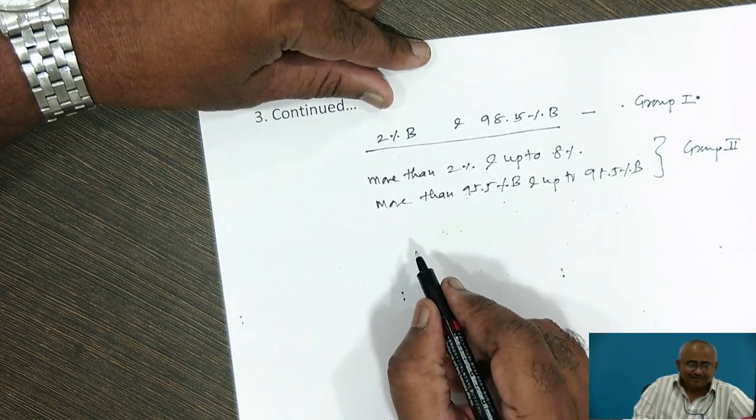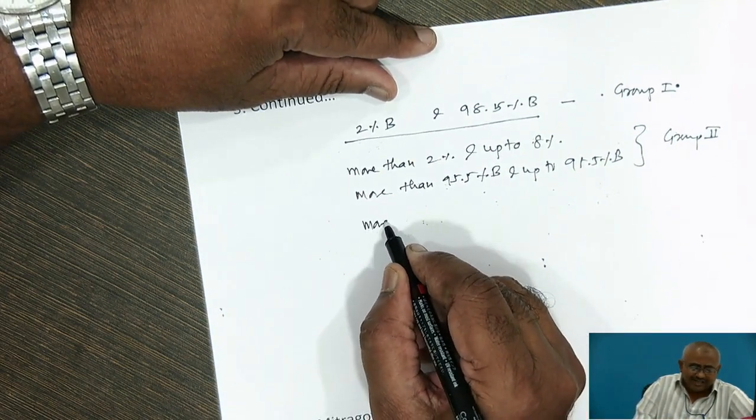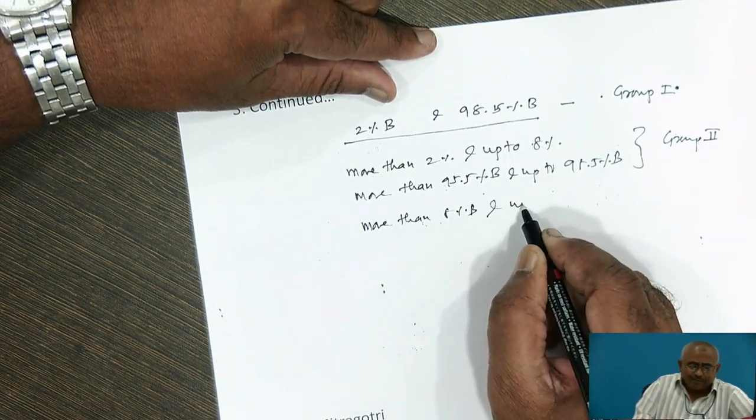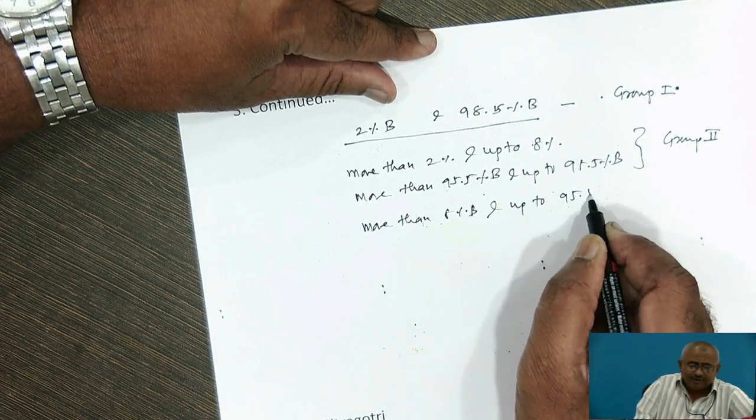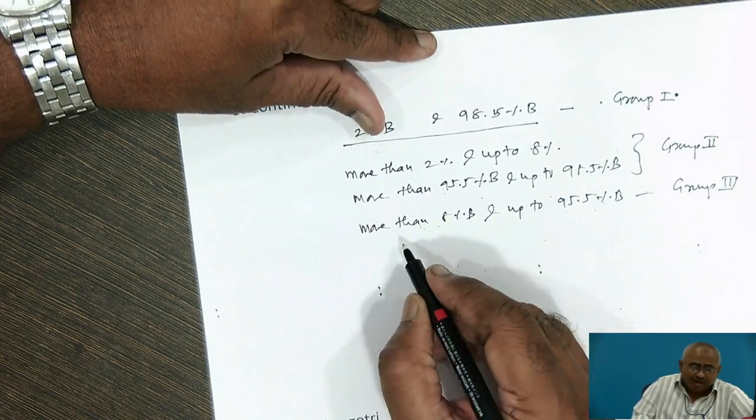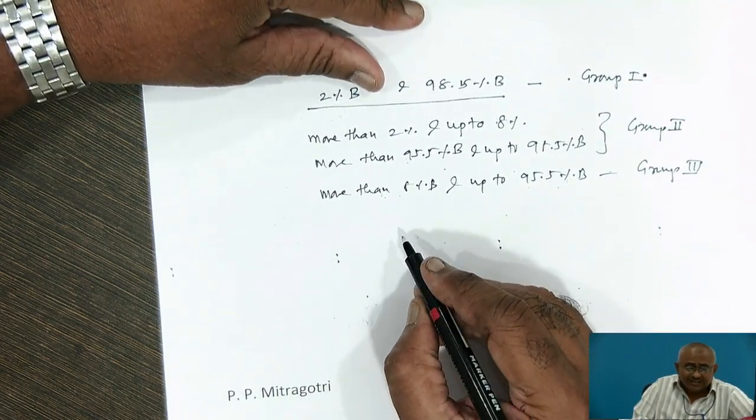Group 3 alloys are the alloys which contain more than 8% B and up to 95.5% B. All these group 3 alloys are non-solid solution alloys.